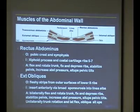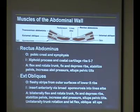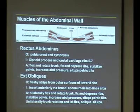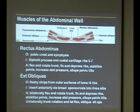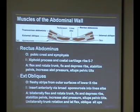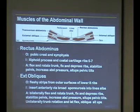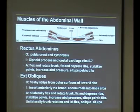Here's another version where we're looking at a transverse slice through here. With the rectus abdominis, the origin is going to be the pubic symphysis and the pubic crest, so it's down at the bottom. And then the insertion is going to be the xiphoid process and then the costal cartilage of the ribs up here — so that's more towards the center.